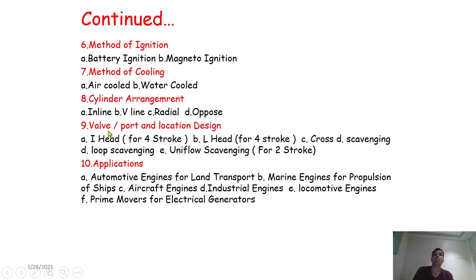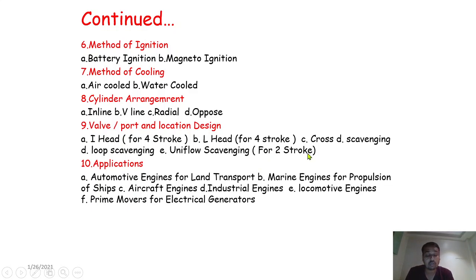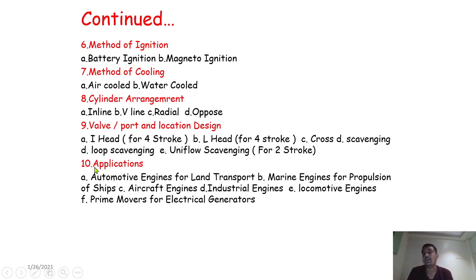The ninth classification is valve or port and location design. For four-stroke engines: (a) I-head type and (b) L-head type. For two-stroke engines: cross-head type, loop scavenging, and uniflow scavenging. Generally, valves are present in four-stroke engines and ports are present in two-stroke engines. This will also be discussed in detail later.